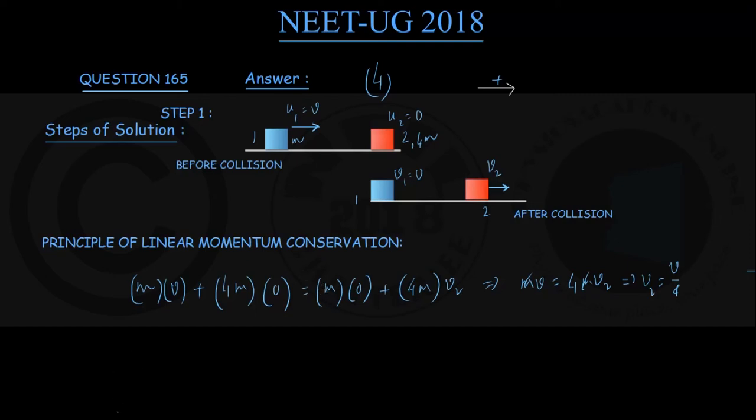Once we have this information, that was step number 1. In step number 2, just recall the definition of coefficient of restitution. The symbol for that is e. e is given by velocity of separation by velocity of approach. Now velocity of separation is v2 minus v1. Velocity of approach is u1 minus u2. Remain careful about this change of order, the chance of silly error here. v2 just now found to be v by 4, minus v1, well v1 is 0, divided by u1.